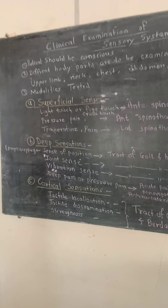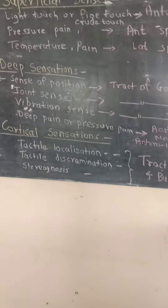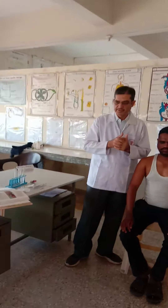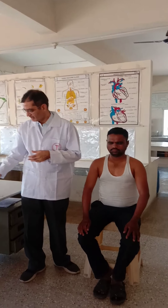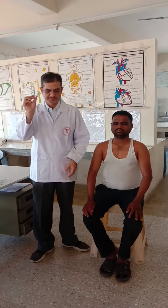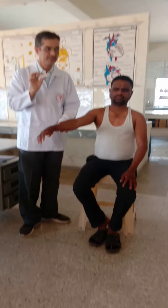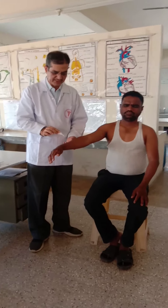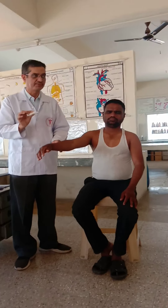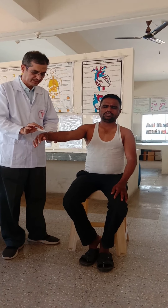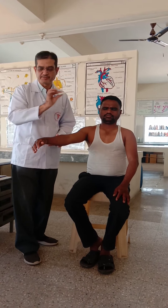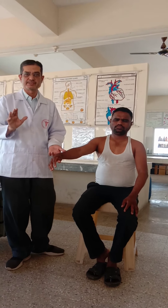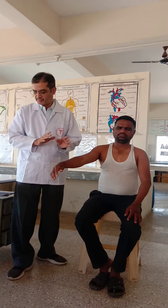Last, that is cortical sensations. We are going to examine three types of tests under cortical sensations. The first is Tactile Localization. For tactile localization, we use cotton wisps, touch at various places, and ask him to identify that particular place. He is able to recognize it, so tactile localization is proper in this case.